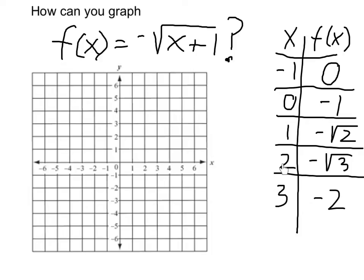Continuing in this fashion, when I put in 2, I get negative square root of 3 and when I put in 3, I get negative 2.